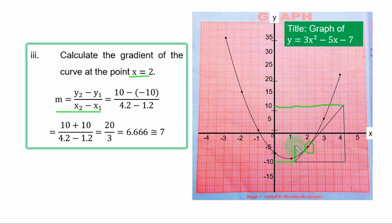You trace this point to s axis. You have s1. And this point will give you s2. So from here, y2 is 10, y1 is minus 10. Then s1 is 1.2. That is the second line after 1. And s2 is 4.2. Second line after 4. So all the points, you put them in the gradient formula in this form.